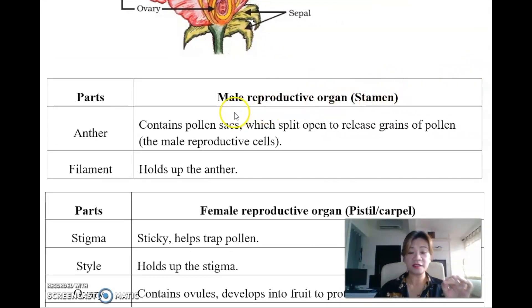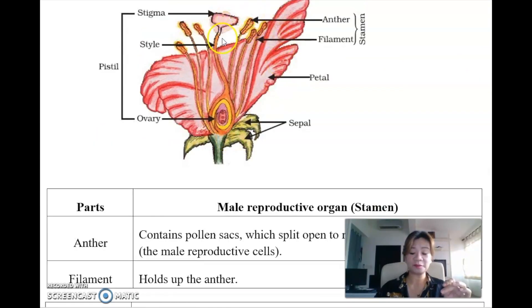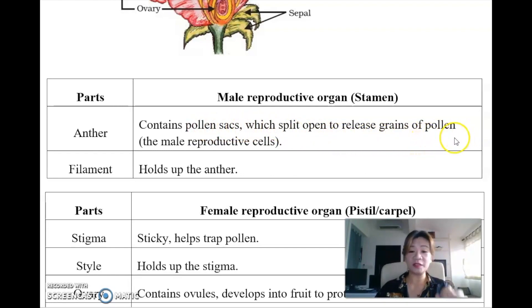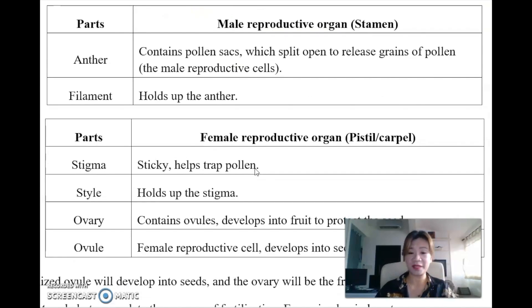Let's look at the explanation for each part. The anther, the top end of the male reproductive part, contains the pollen sacs, which hold the male reproductive cells called pollens. The sacs split open to release the grains of pollen. Pollen is the male reproductive cells. The filament holds up the anther - that's all you need to memorize for the function of the filament.